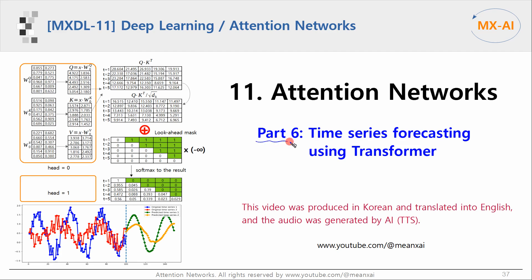This is part 6 of a series on attention networks. In this video, we will write code to predict a time series using a transformer model. This video was produced in Korean and translated into English. My voice is generated by AI text-to-speech.